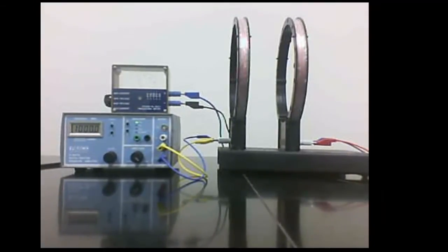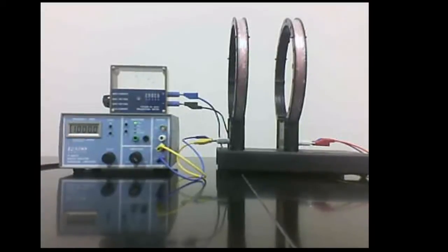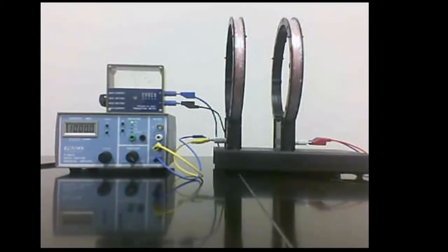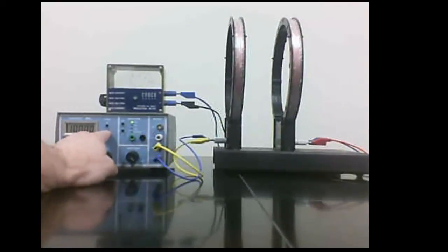In this demonstration we've connected a primary coil to a sine wave generator and a secondary coil just to an ammeter. We will now adjust the frequency and amplitude and watch what happens to the induced current in the second coil.